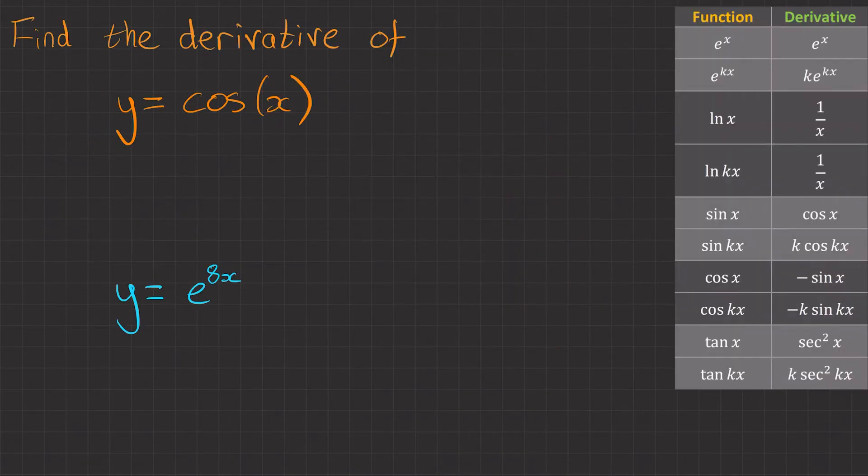I'll show you how to do these two questions. Firstly, we've got y equals cos x. Well if we look at our table of derivatives, look down and you'll find cos x.